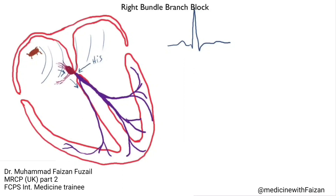Recognizing conduction system disease is not difficult, but you have to understand what the QRS complex looks like. A very important concept is that the bundle branches are made up of specialized cells — long heart muscle cells — that are designed for very rapid conduction velocity. These cells bring the signal down to the ventricles in a very rapid, efficient manner.